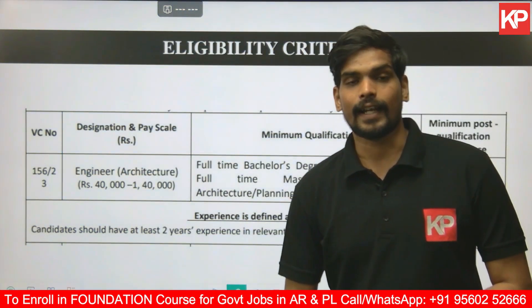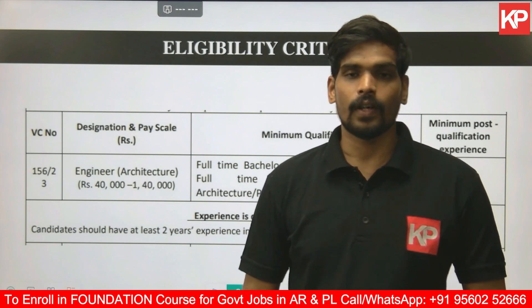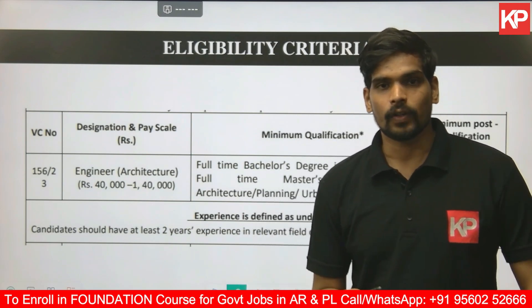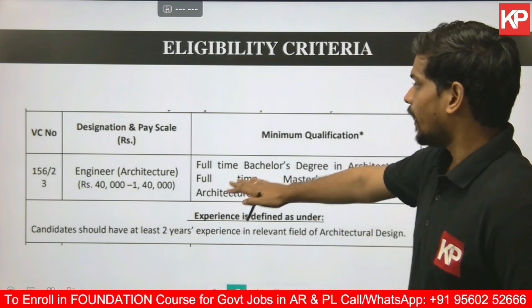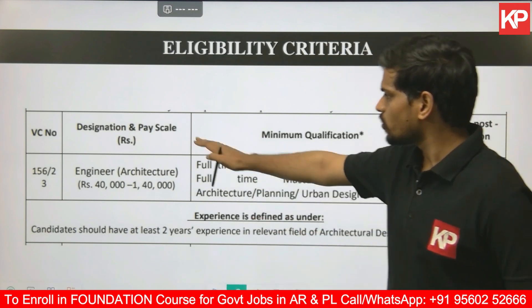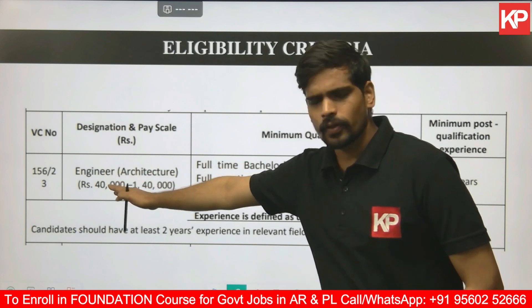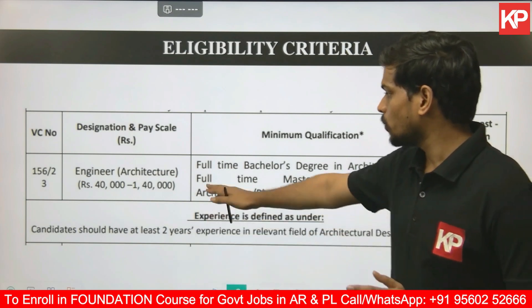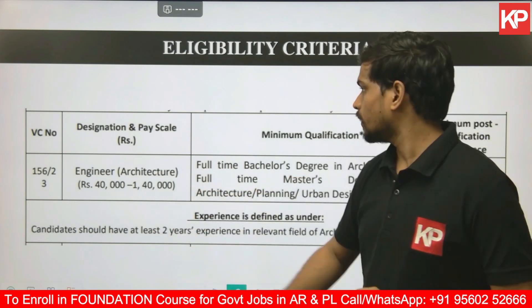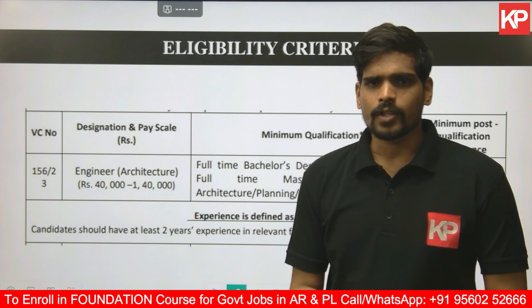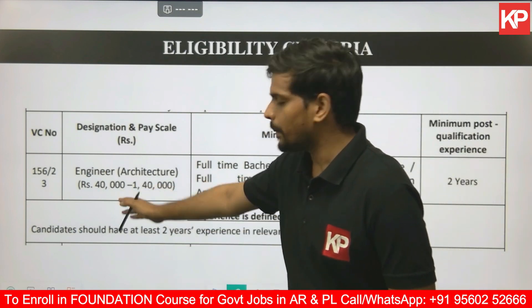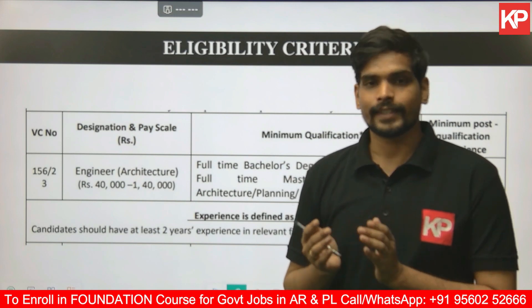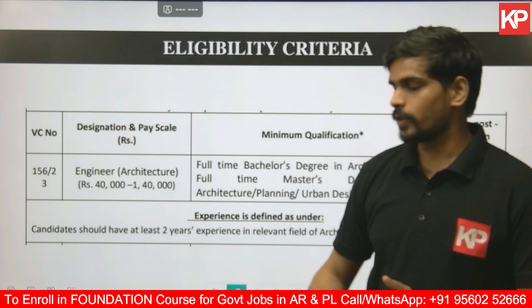As per the official notification published on the RITES website, there are a total of three openings for the post of Architect. The designation is Engineer Architecture and the pay scale is from 40,000 to 1,40,000. It is mentioned in the official notification that the minimum pay scale of 40,000 corresponds to a CTC of 13.6 lakhs per annum.